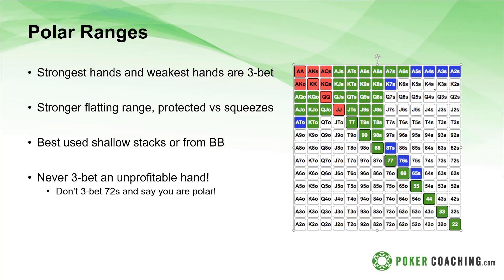A key difference with a polar range is you'll have a much stronger flatting range. Compared to the linear range's weak flat calls, the polar range flat calls hands like ace-jack suited, ace-queen offsuit, king-jack suited, queen-jack suited, pocket tens, nines, and eights. This strong flatting range makes you much more protected against squeezes.